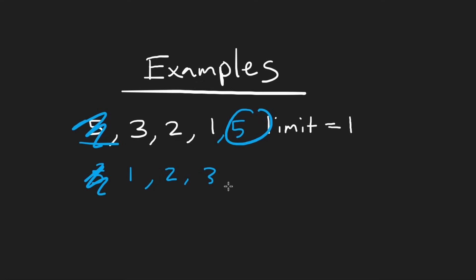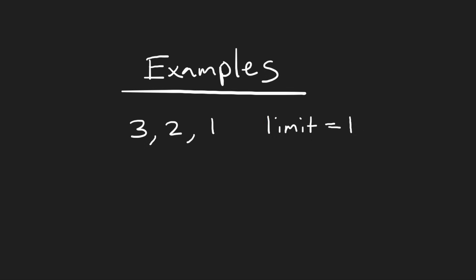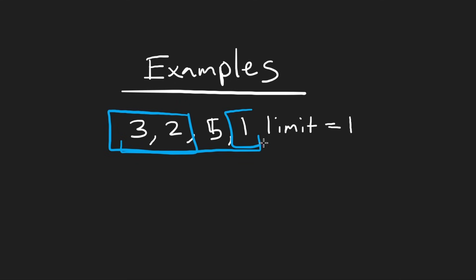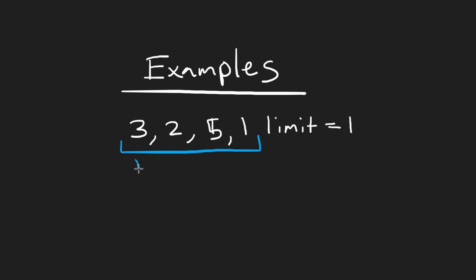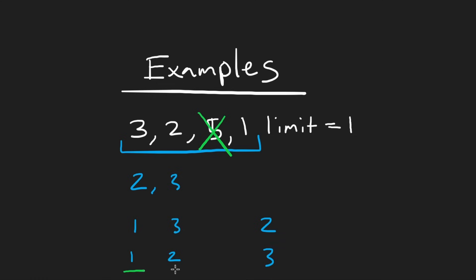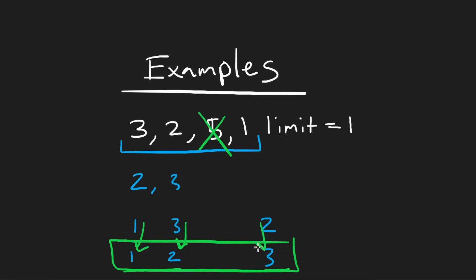Even if five were in the middle of the array, we can still swap the other elements among themselves — swaps don't have to be adjacent. So we'd still sort 1, 2, 3 into their correct relative positions, just with a gap where five sits. If you ignore the gap, we're essentially performing the same swaps and getting those numbers sorted in relative order, even though there's a fixed element in between.